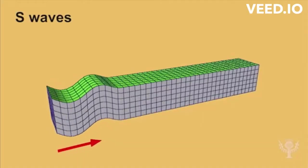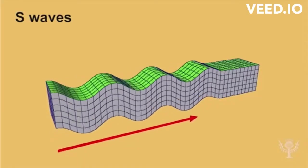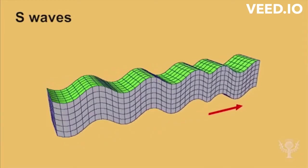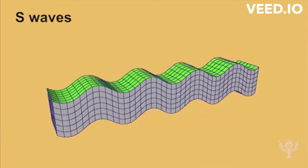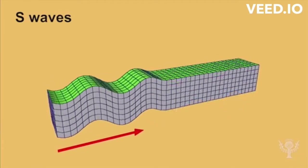Primary waves travel with a velocity that depends on the elastic properties of the rock through which they travel. These waves have the highest velocity of all seismic waves and thus reach the seismograph first.